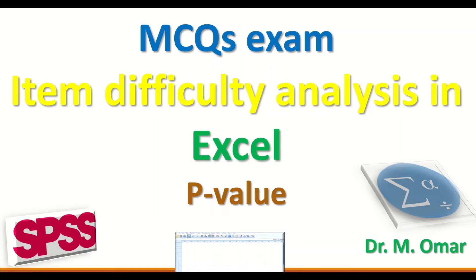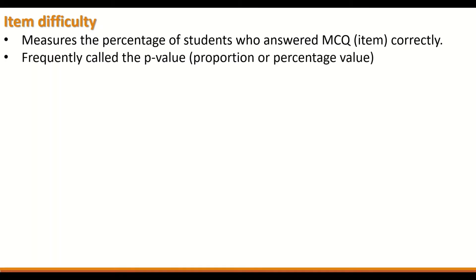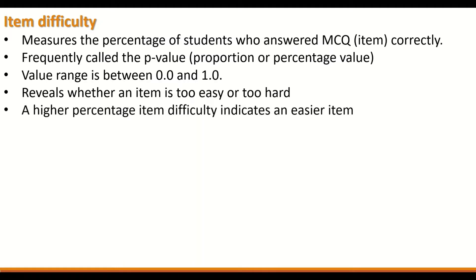Item difficulty analysis in Excel for multiple choice question exams and determination of the p-value or proportion value. Item difficulty measures the percentage of students who answered a multiple choice question item correctly. It is frequently called the p-value, proportion, or percentage value. The item difficulty value ranges between 0 and 1, and reveals whether an item is too easy or too hard.